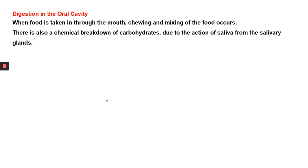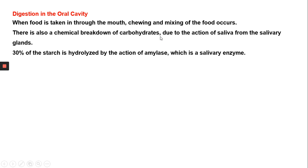When food is taken into the mouth, chewing and mixing of the food occurs. There is also a chemical breakdown of carbohydrates — specifically starch — and this is done by the action of saliva. About 30% of the starch is hydrolyzed by the action of salivary amylase. In the reaction, starch mixes with salivary amylase and breaks down into a simple sugar called maltose.